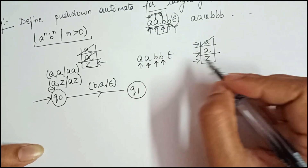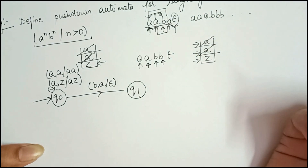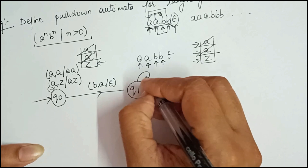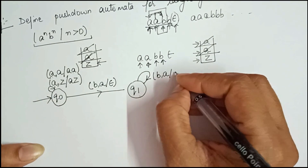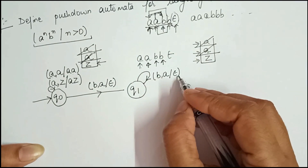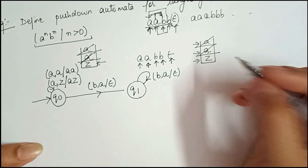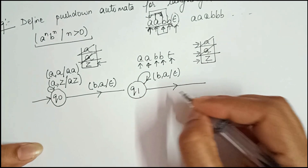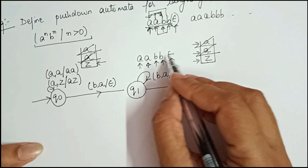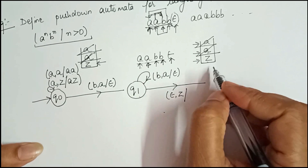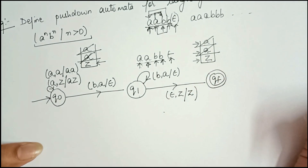The transition for 'b': input symbol is b, top of stack is a, so we pop it, denoted as b, a / ε. The last transition: input symbol is ε, top of stack is Z — this denotes that we have read all the string and the stack contains only Z. We reach the final state qf.